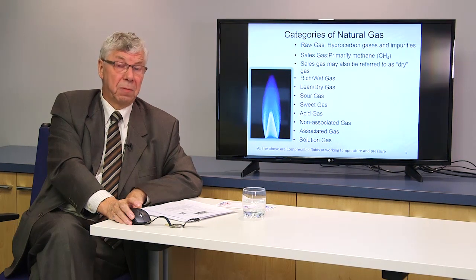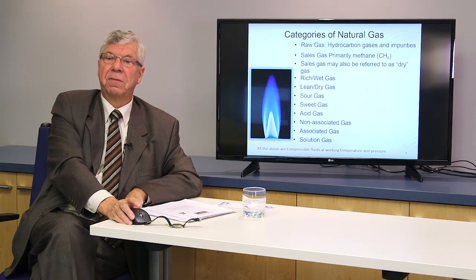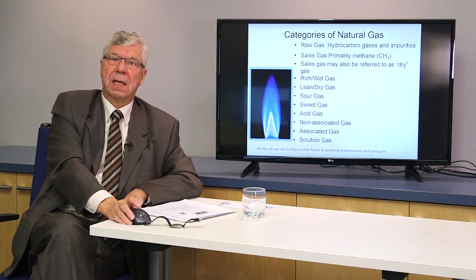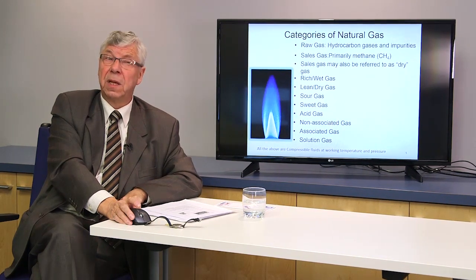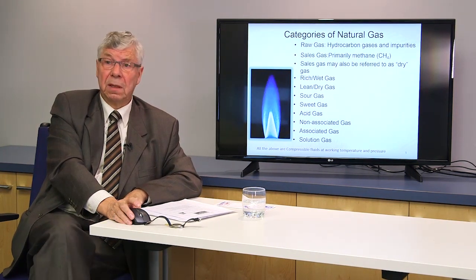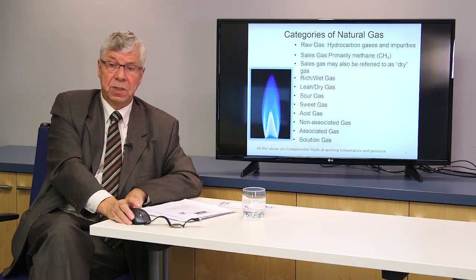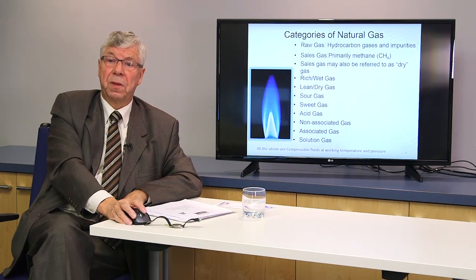For some producing fields, sulfur or hydrogen sulfide may be present, constituting sour gas. When we've also got the presence of water, we get another category called acid gas, which can be injurious to the internal corrosion of the pipe. When drilling for oil, we often find associated gas — either on top of the gas reservoir or in solution with the oil itself.